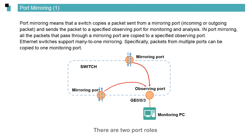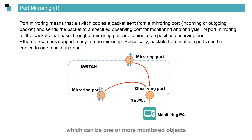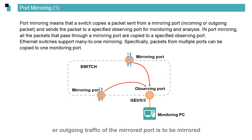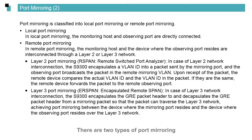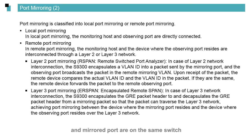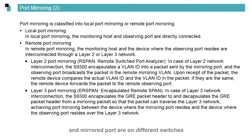There are two port roles in port mirroring. The first role is the observing port — this is the port to which data is copied. The other role is the mirrored port, which can be one or more monitored objects. You can specify whether the incoming or outgoing traffic of the mirrored port is to be mirrored. There are two types of port mirroring: local port mirroring, where the observing port and mirrored port are on the same switch, and remote port mirroring, where they are on different switches.